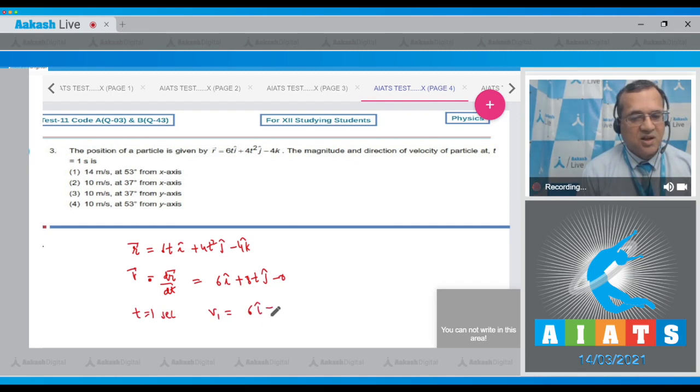Now velocity at t equals 1 second: velocity at t equals 1 is 6*i_cap plus 8*1*j_cap, so this equals 6*i_cap plus 8*j_cap. Now you draw the velocity: 6 will be along the x-axis and 8 will be along the y-axis, so this becomes the velocity.